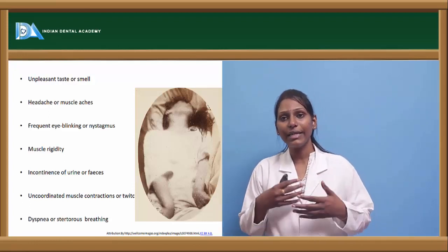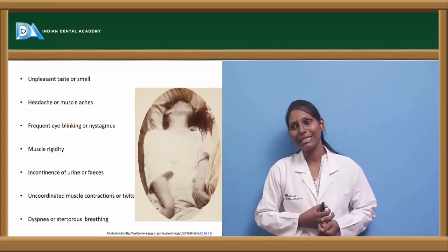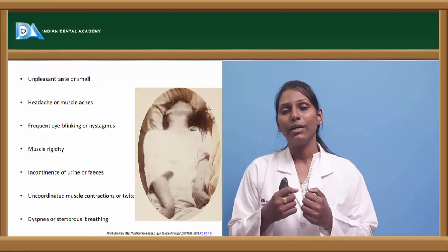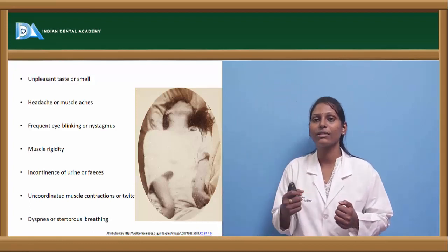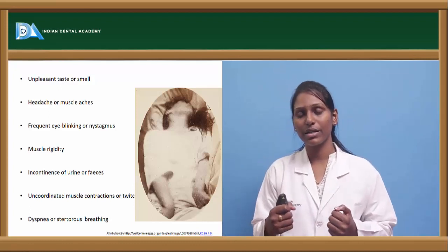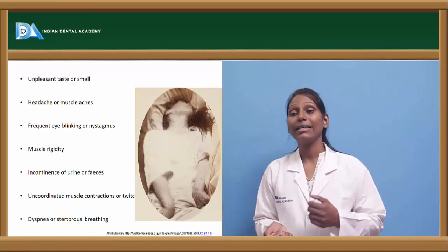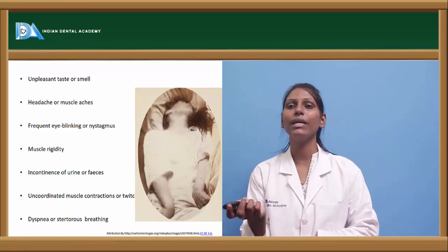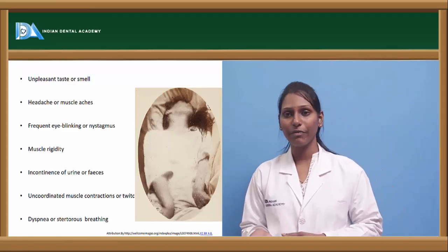Patients have dyspnea and stertorous breathing. Uncoordinated muscle contractions and twitchings are seen during the ictal phase, along with tremors in the body. During the ictal phase, there will also be incontinence for urine and feces — patients will involuntarily pass urine or feces.